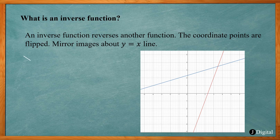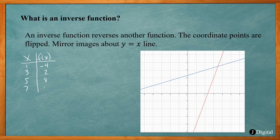So if I have one function where I have x and f of x, the x values are 1, 3, 5, and 7, and the corresponding f of x values are negative 4, 2, 8, and 14.